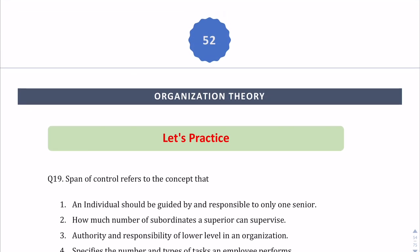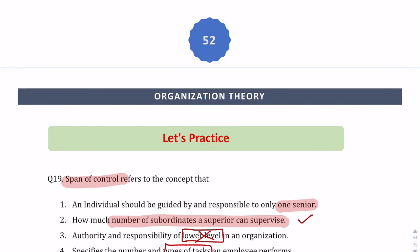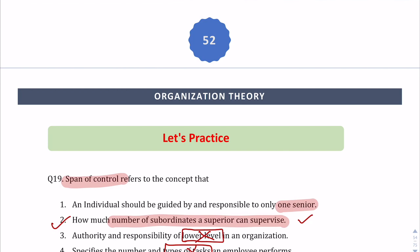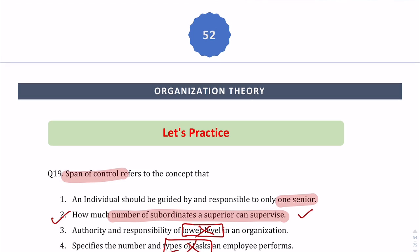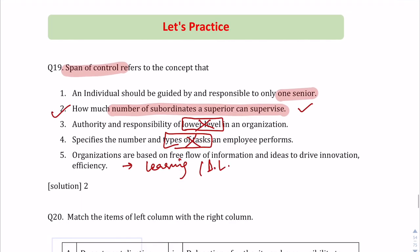Question 1: Span of control refers to which concept? Option A: An individual should be guided by and responsible to only one senior — that is unity of command, not span of control. Option B: How many subordinates a superior can supervise — this is exactly span of control. Option C: Authority and responsibility of lower level — span of control is not limited to lower level, so this is wrong. Option D: Specifies number and types of tasks — not focused on tasks at all. The answer is B.